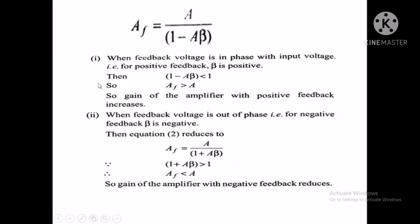Let us consider three cases. Case number 1: when the feedback voltage is in phase with the input voltage — that is, positive feedback. If input and output are in phase, the feedback is positive and beta is positive. The denominator becomes 1 minus A beta, which decreases, so Af increases. For positive feedback, the gain of the amplifier increases.